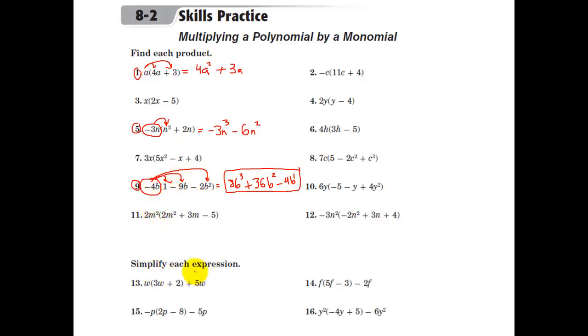And let's move down here to simplify each expression, number 13. So here we have some distribution, and then we also have another term to add on. So I'll do this one in two steps. Let's first distribute. W times 3w is 3w squared. W times 2 is plus 2w. So that's the first part from distribution. And we still have this plus 5w at the end.